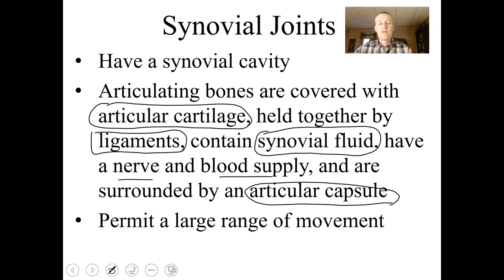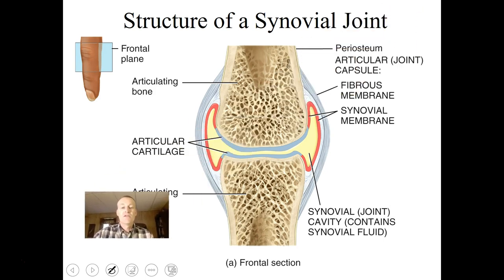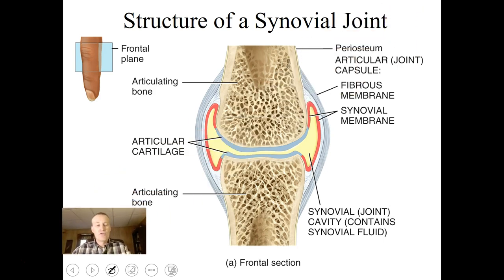Synovial joints permit a really large range of motion. I want to talk first about a generic stereotypical synovial joint and show you the parts, and then look at more specific ones like the elbow, the knee, and the hip and shoulder.